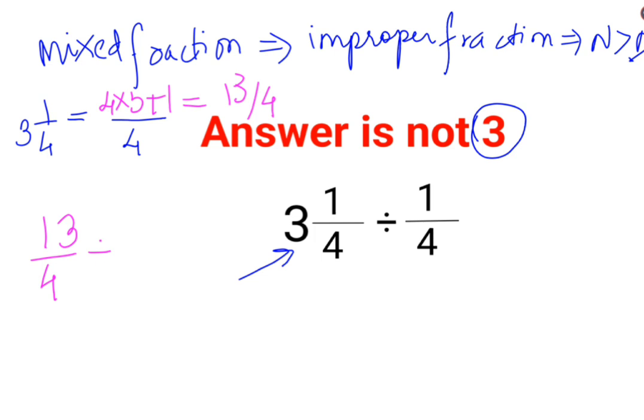Whenever you want to do division of two fractions, you follow the rule of KCF. K stands for keeping the first number as it is, so we'll keep 13/4 as it is. C stands for changing the division sign to multiplication. F stands for flipping or taking the reciprocal of 1/4, which is 4. So the 4s get cancelled, and the answer is 13.